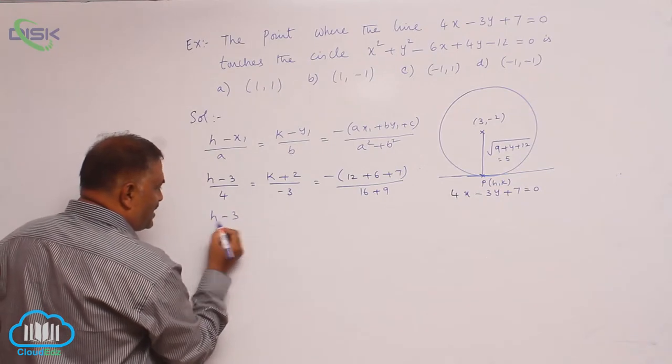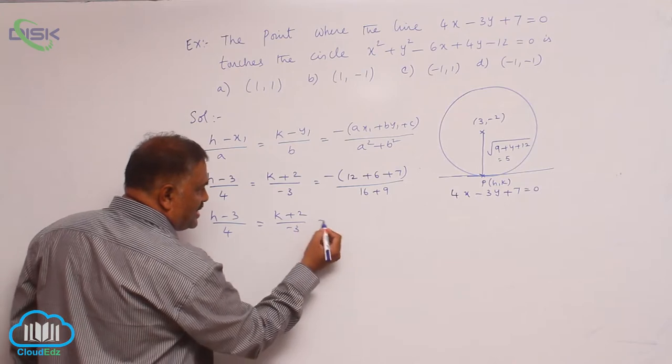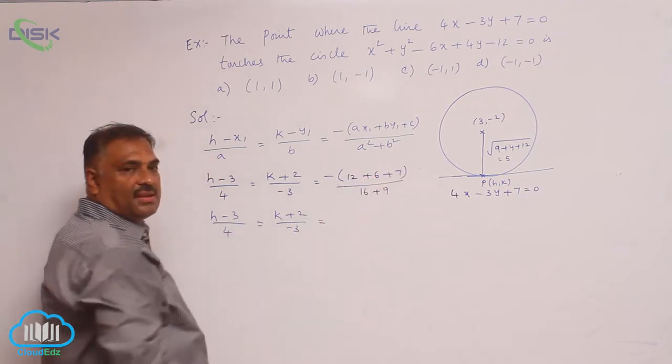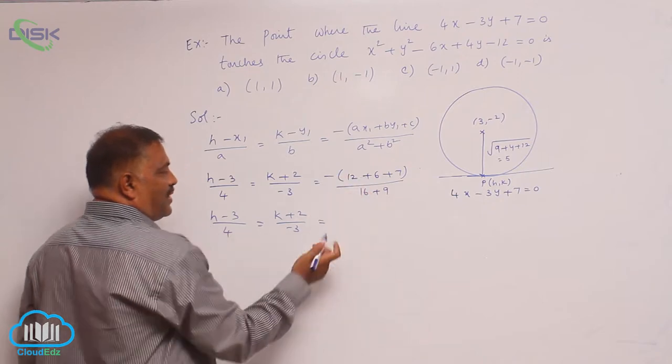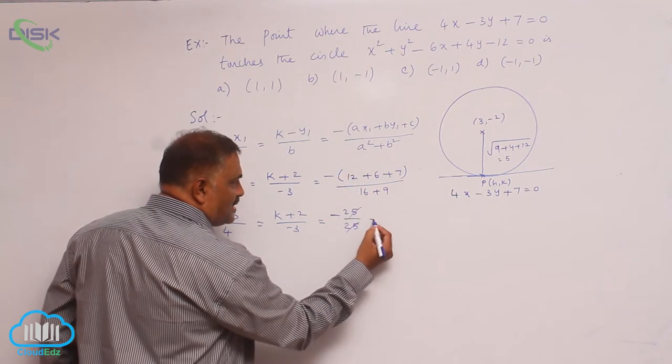Now this is h minus 3 by 4 equal to k plus 2 by minus 3 is equal to, you know that 7 plus 6 is 13 plus 12 is 25 minus 25, minus 25 by 25 cancels giving minus 1.